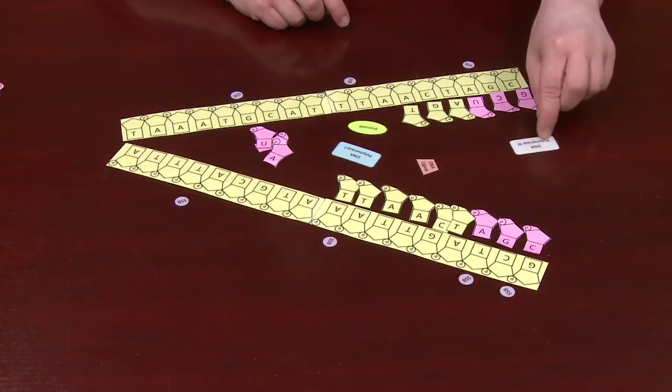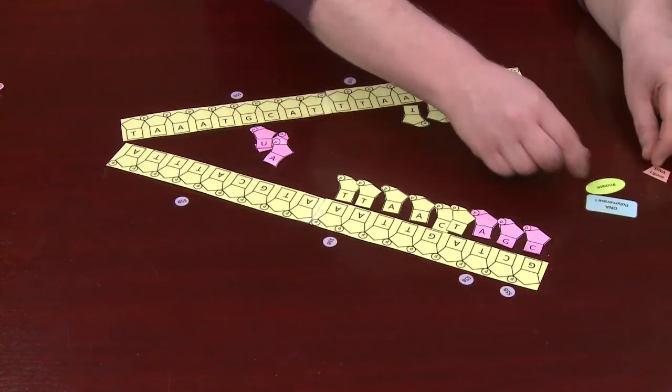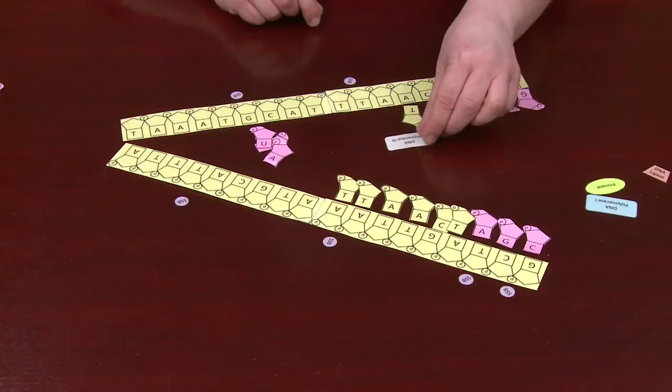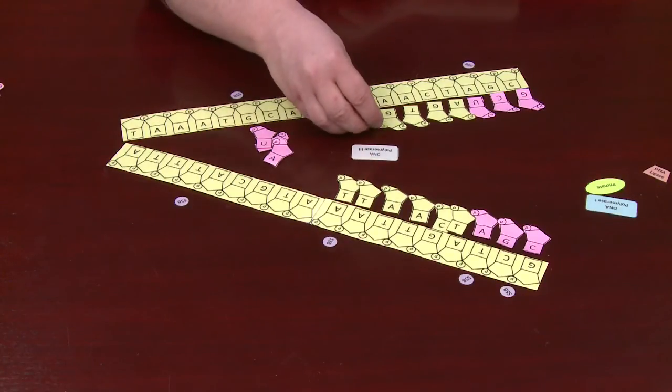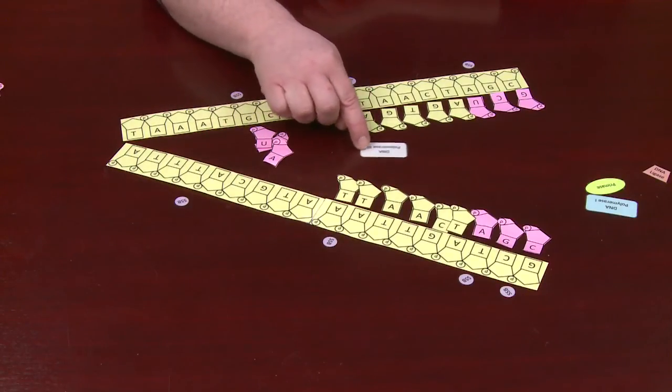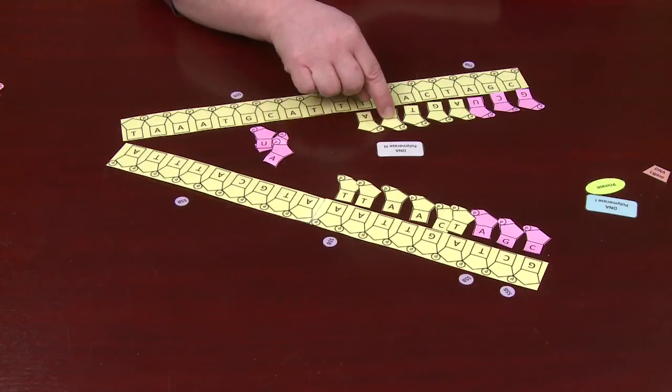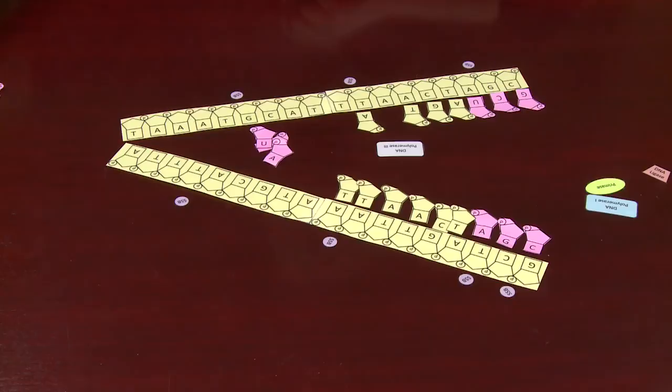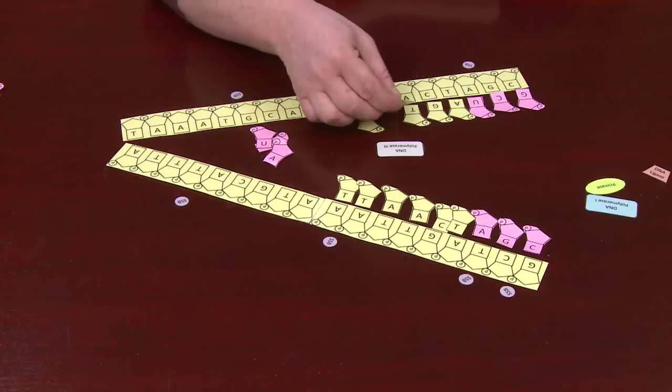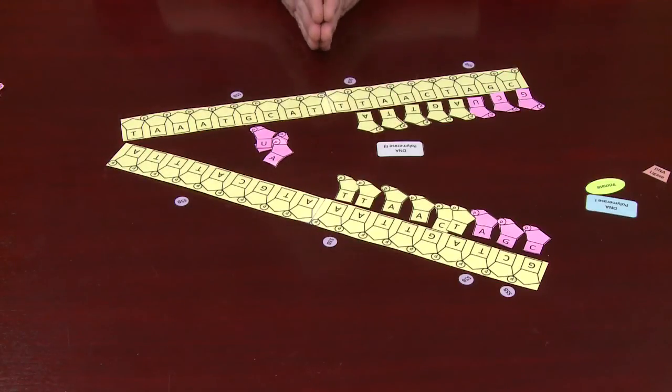Now, DNA polymerase 3 has another job. In addition to coming along and synthesizing in the appropriate DNA, it also goes backwards and where it sees a mistake, it will remove the mistake and put in the appropriate DNA. The process of going backwards and removing mistakes and correcting them is called 3' to 5' exonuclease activity.